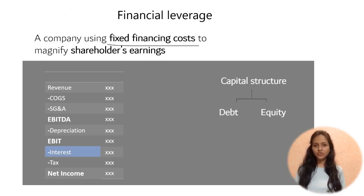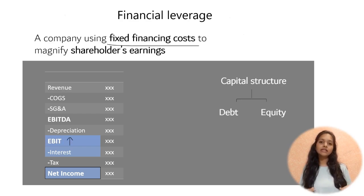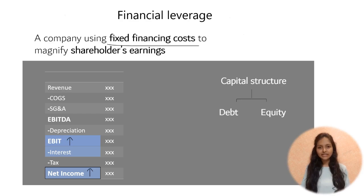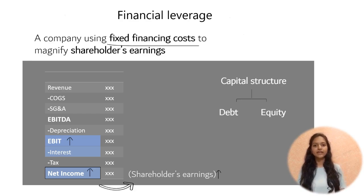For equity there is no fixed charge, but shareholders do receive some profits from the leftover net income. If a company uses debt financing for certain projects which turn out to be profitable, its EBIT increases, which causes its net income to increase even after paying the interest amount. Because of the increasing net income, shareholders' earnings can also increase — and this is how earnings are magnified.